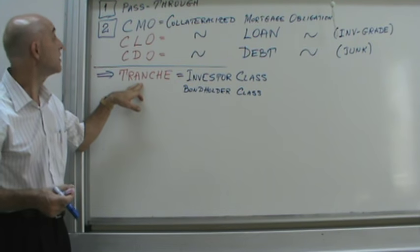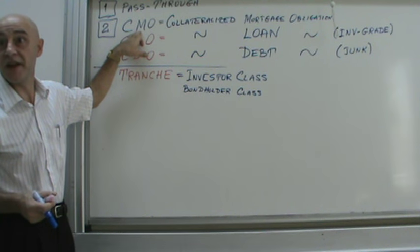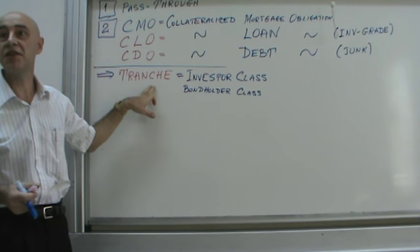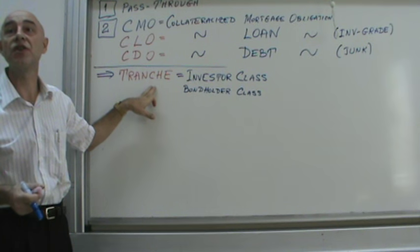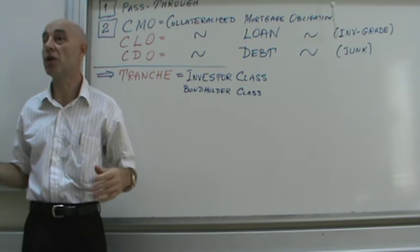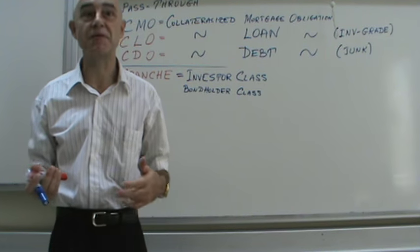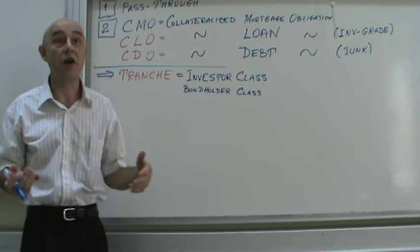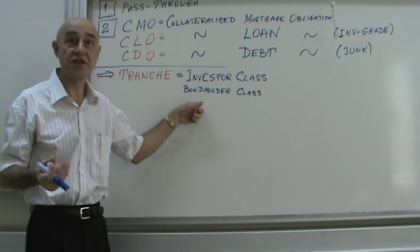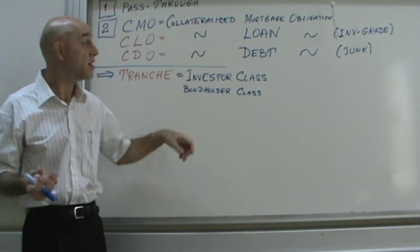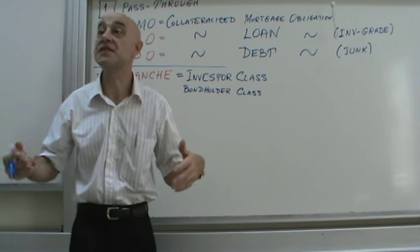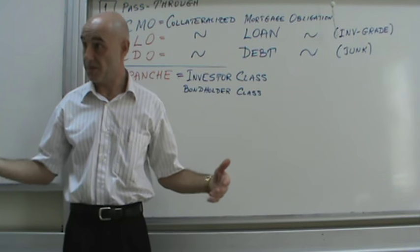An investor class is a class of investors which gets exactly the same — identical — returns. A CMO is a financial instrument with at least two investor classes, usually a lot more: sometimes three, quite often five, six, seven, or eight. Each class is guaranteed its own payments.